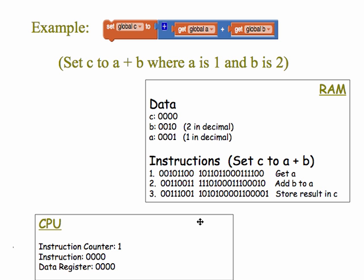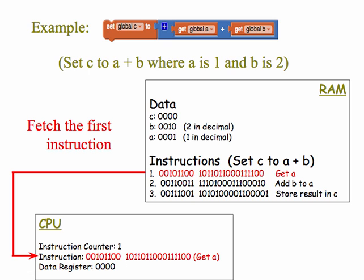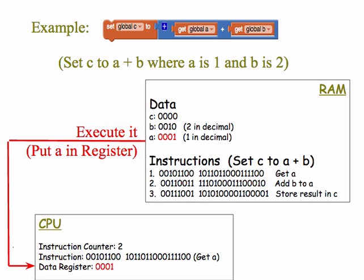And then here's our processor. It's set to load or fetch the instruction at location 1 in the instruction code. It has its own instruction register, which currently is empty. And it has a data register. We're currently just storing the data 0. So let's go. First, we fetch the instruction. In this case, the instruction at location 1. This is the get A instruction. So you see it moving into the instruction register in the processor. Next, we execute the instruction. And the instruction says, get A. So A, which is 0001, is put into the data register. And notice the instruction counter has been incremented to 2.